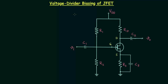We will study voltage divider biasing in this lecture. We have already completed two other biasing schemes: the first one is fixed bias configuration and the second one is self bias configuration. Now in this presentation we will discuss the third biasing scheme, which is voltage divider biasing.